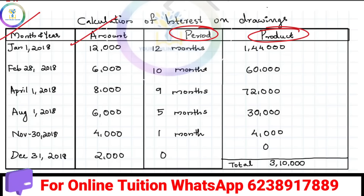The book closing date is December 31st. For January, counting from January to December 31st gives us 12 months. For February 28th to December 31st, we count: March, April, May, June, July, August, September, October, November, December — that is 10 months.